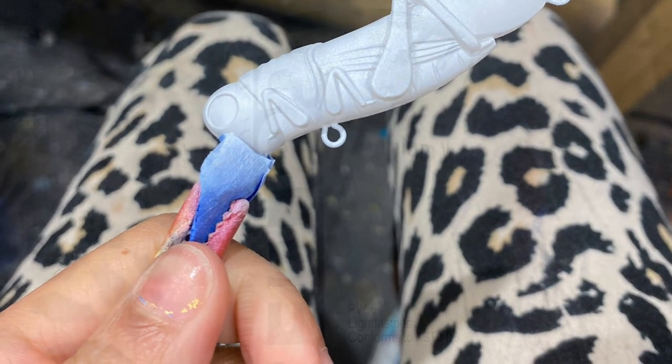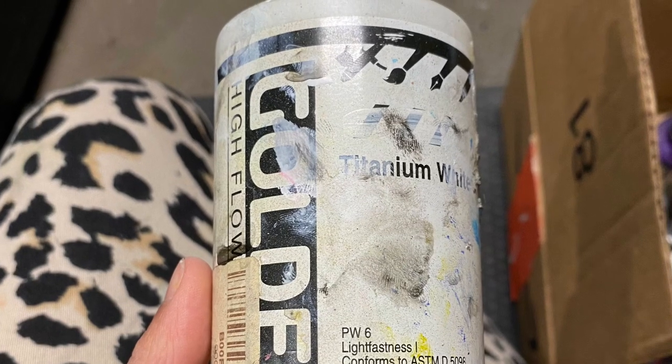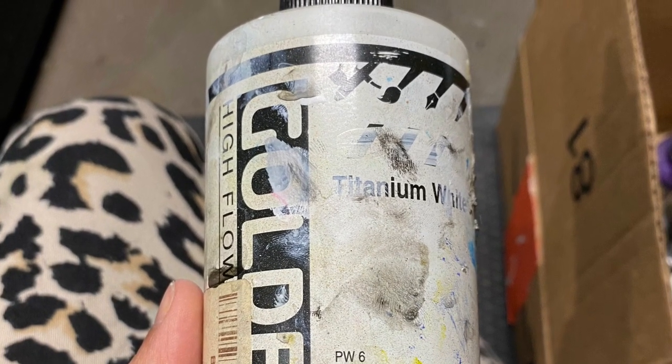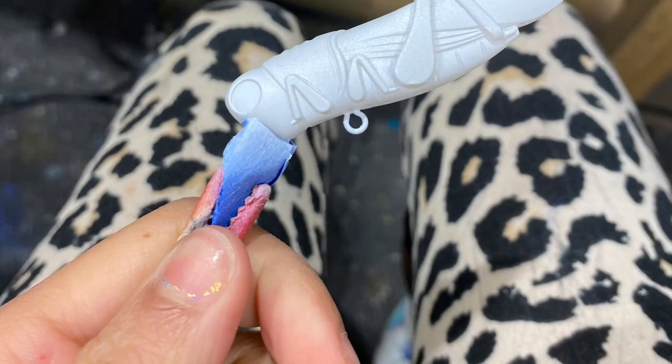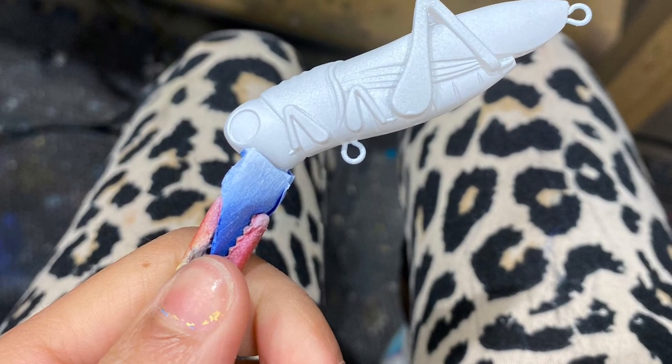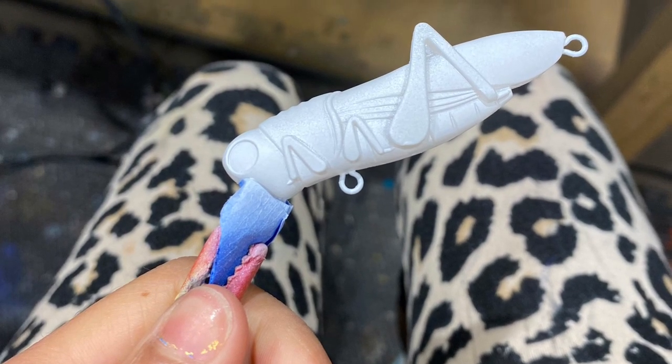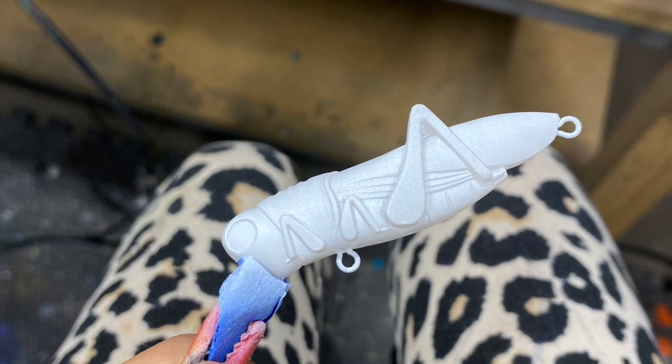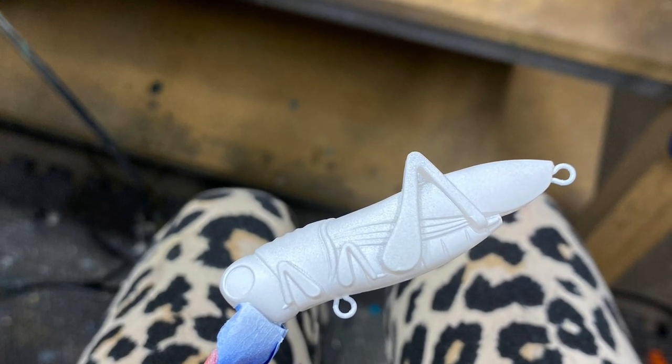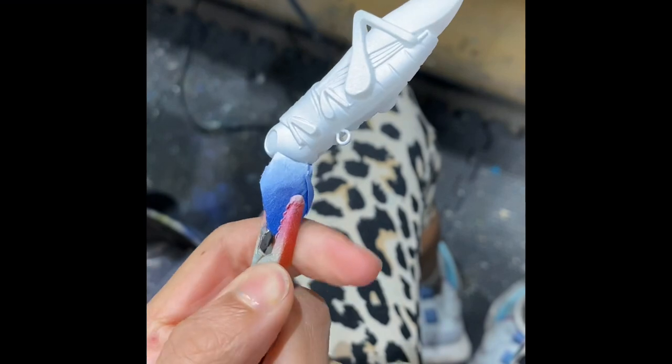The first thing I did was a good base coat of Golden High Flow acrylic airbrush paint. Man, that is a mouthful. Most of this will be painted with an airbrush, but some will be painted with a paintbrush.